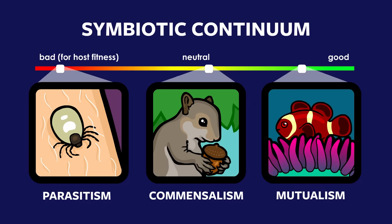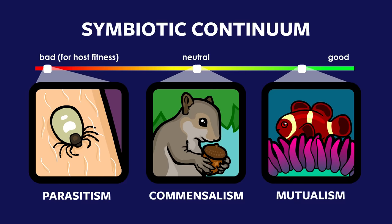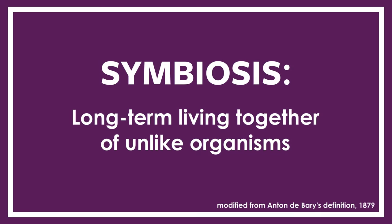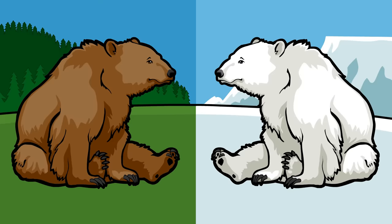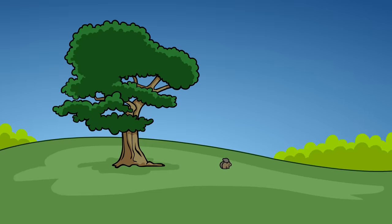These fascinating interactions and evolutionary transitions from enemy to friend, and sometimes from friend to enemy, are all possible because of symbiosis — the long-term living together of unlike organisms. While most people have no trouble understanding how evolution causes animals to adapt to their environment, we often forget that a creature's environment also includes the other organisms that share that environment. If two species live together and interact long enough, the slow process of evolution — descent with modification acted upon by selection — can cause living things to evolve and adapt to each other.